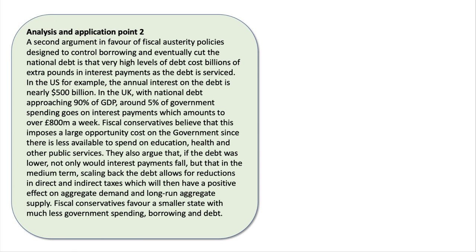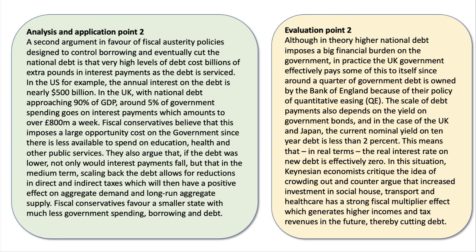Fiscal conservatives believe that this imposes a big opportunity cost on government — it means there's less available to spend on education, health, and other key public services. They also argue that if the debt was cut, not only would interest payments fall, but in the medium term that would allow for reductions in direct and indirect taxes, which would then have a positive effect on demand and aggregate supply. Fiscal conservatives believe the state should be smaller — spend less, borrow less, and run up less debt, because that allows for a cut in the tax burden.